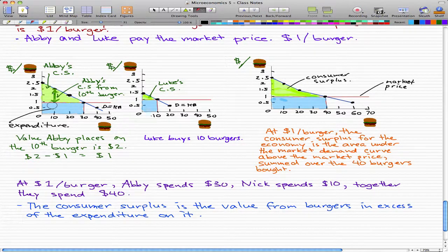So at her 10th burger, Abby actually has a discount of $1. Because she values her burger, her 10th burger, at $2, but she's actually getting it for $1. So this green part is actually her discount. This green highlighted part under the triangle, that's her discount. And this blue rectangle that we have here is the money that Abby has to pay for her burger, which is $1.